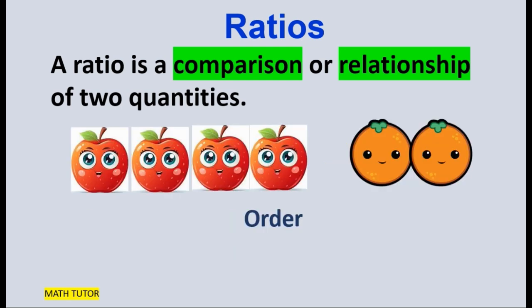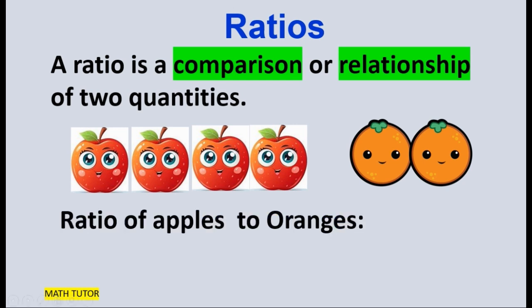Now here we have some apples and oranges. Order is very important. First we will talk about the apples then oranges. So the ratio will be the ratio of apples to oranges: 4 is to 2, or 4 by 2, or 4 to 2.